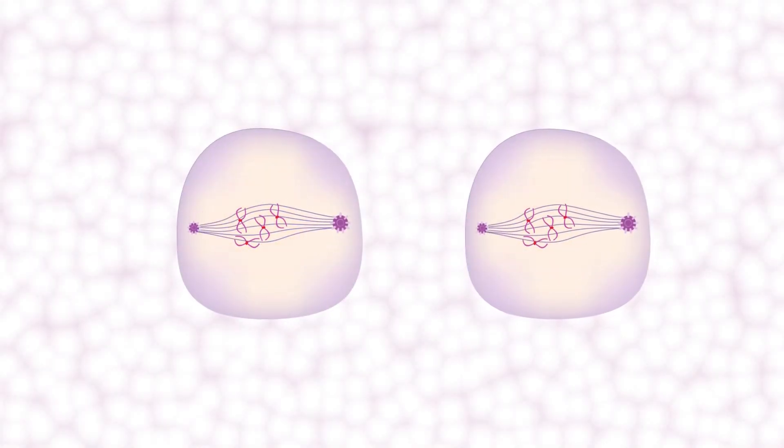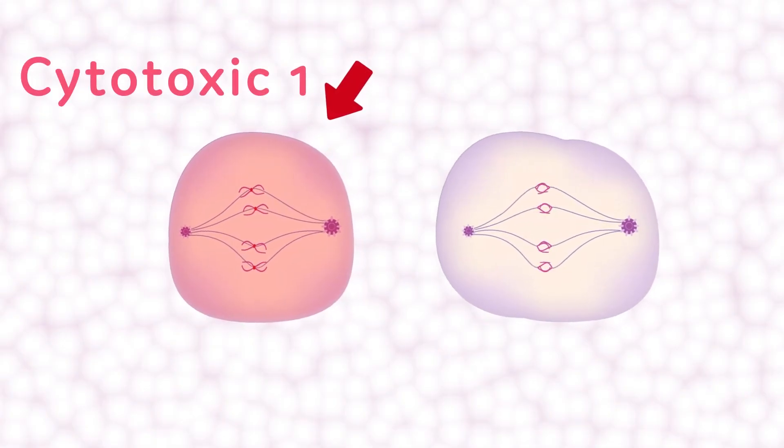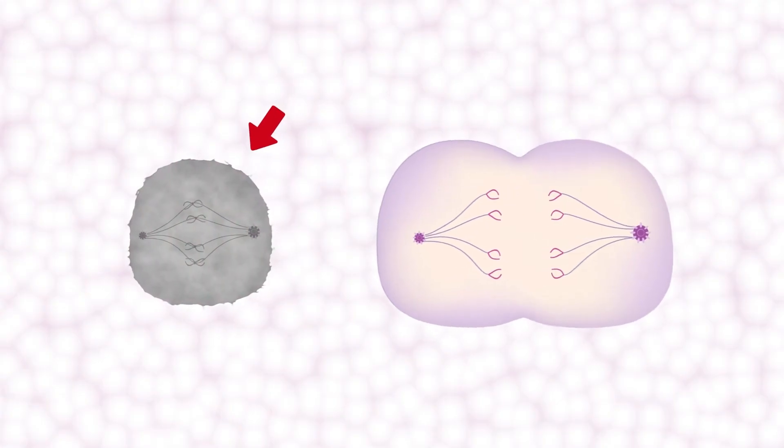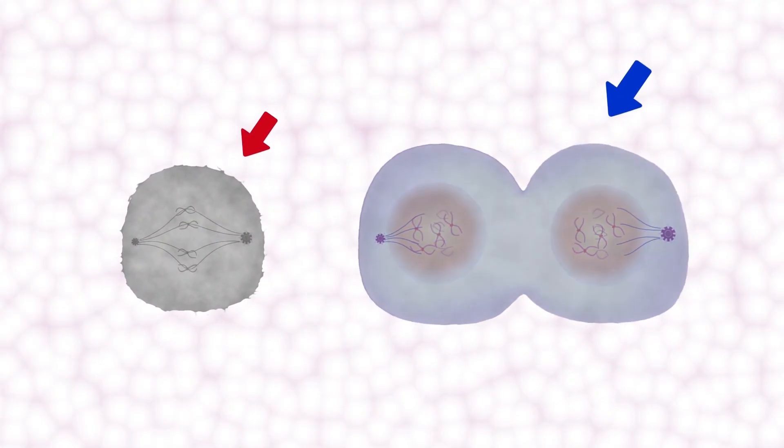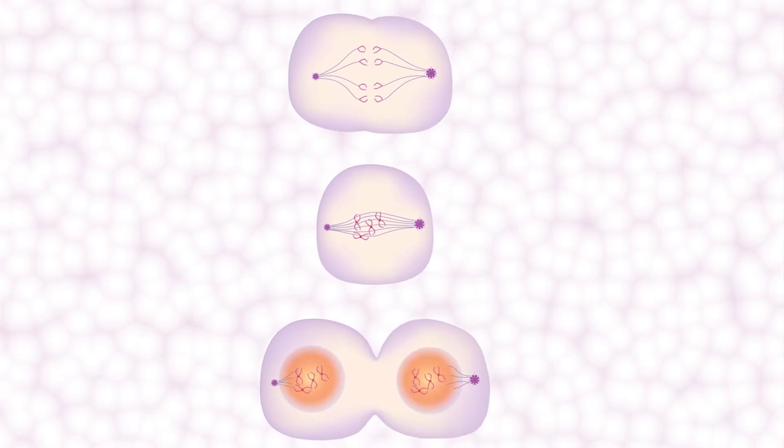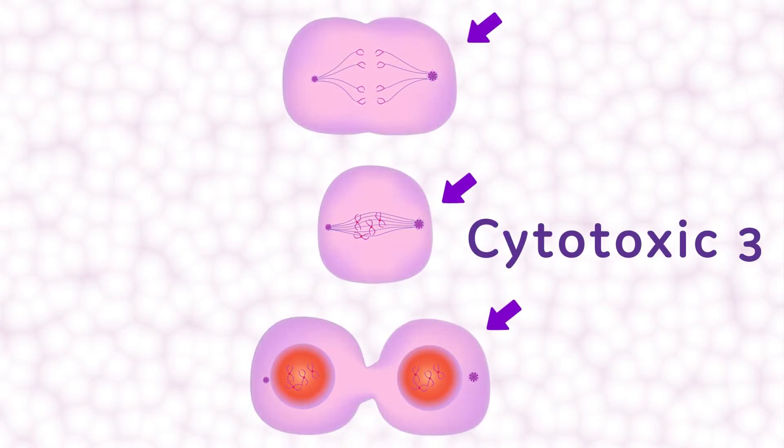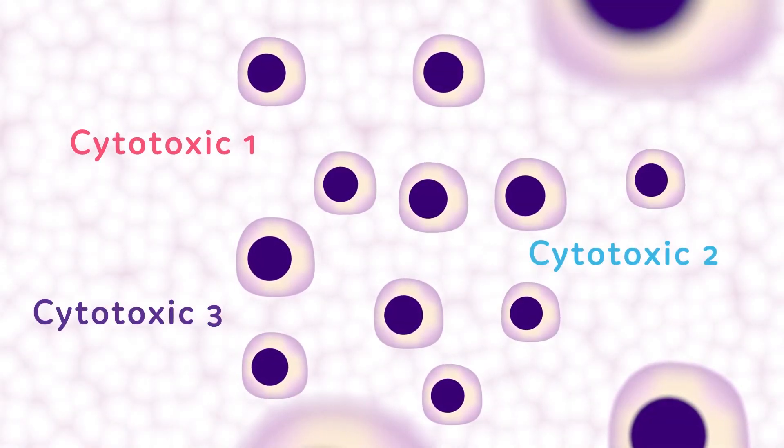Cytotoxic drugs stop cells dividing or cause them to die. Some cytotoxic drugs work in a particular phase of the cell cycle, so only cells in the affected phase are stopped or killed. Others work on any cell that is dividing, so all dividing cells are stopped or killed. Cytotoxic drugs have little or no effect on cells that are not dividing.